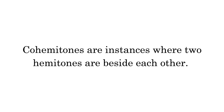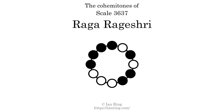Co-hematones are instances where two hematones are beside each other. This scale has two co-hematones. They are at positions here and here.